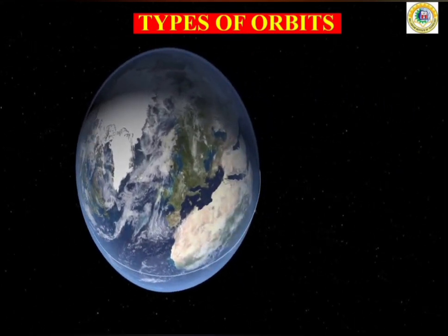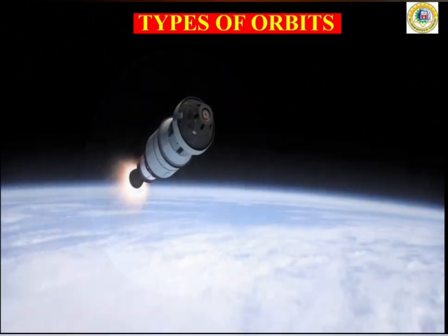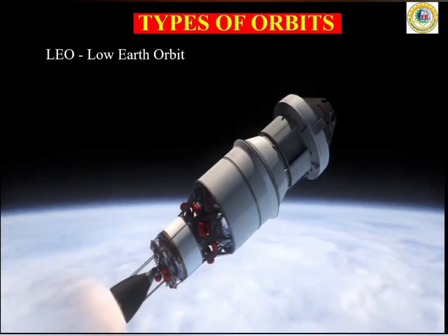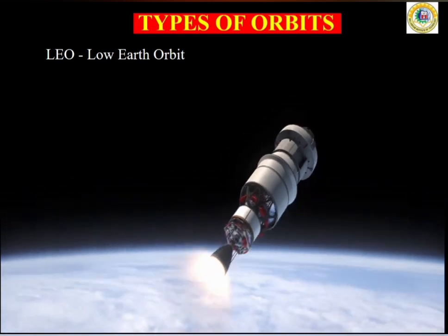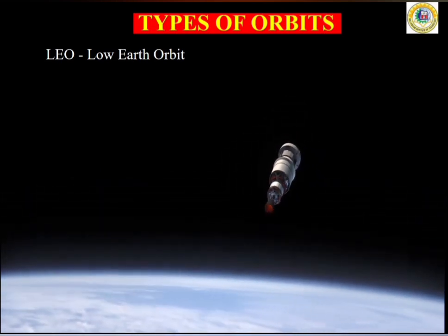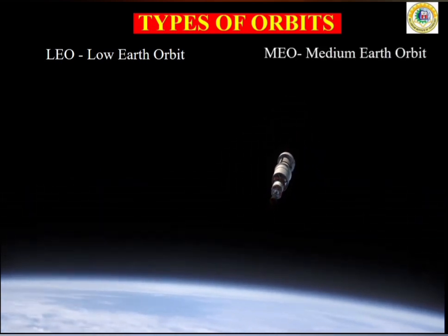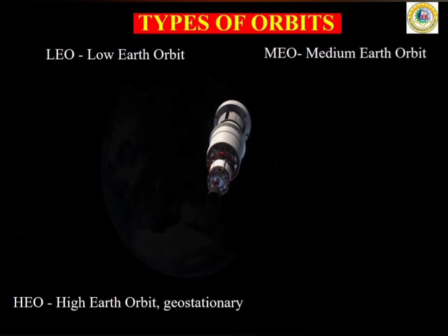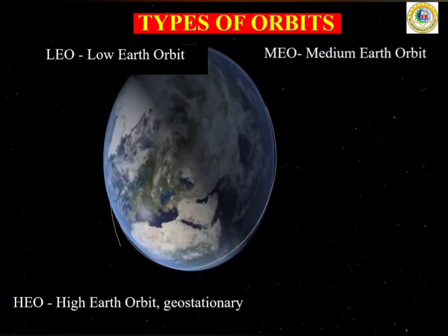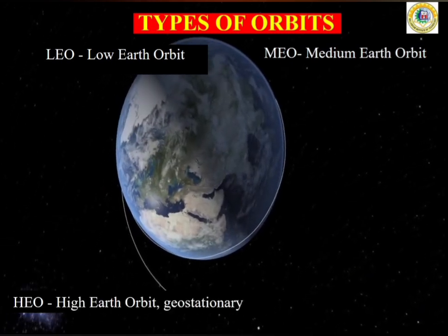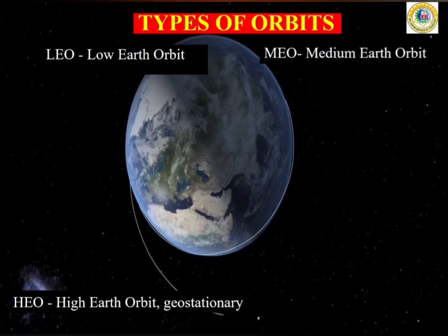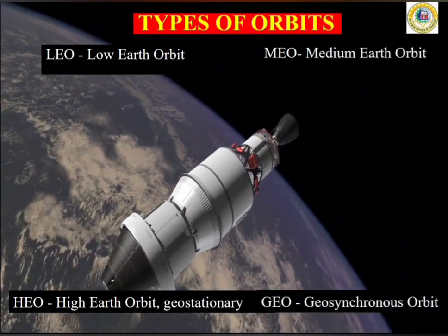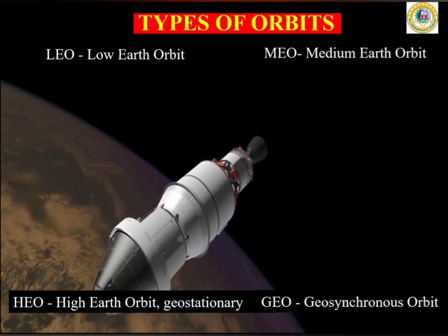Satellite orbits are of different types. The first orbit is LEO — low earth orbit. The second is MEO — medium earth orbit. The third is HEO — high earth orbit, which is a geostationary orbit. And the last one is GEO — that is geosynchronous orbit.